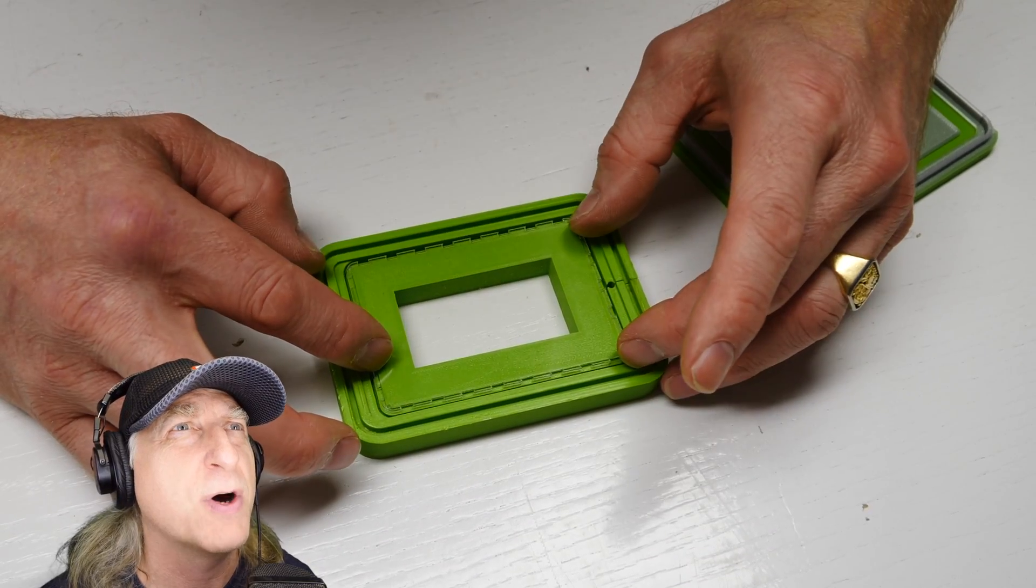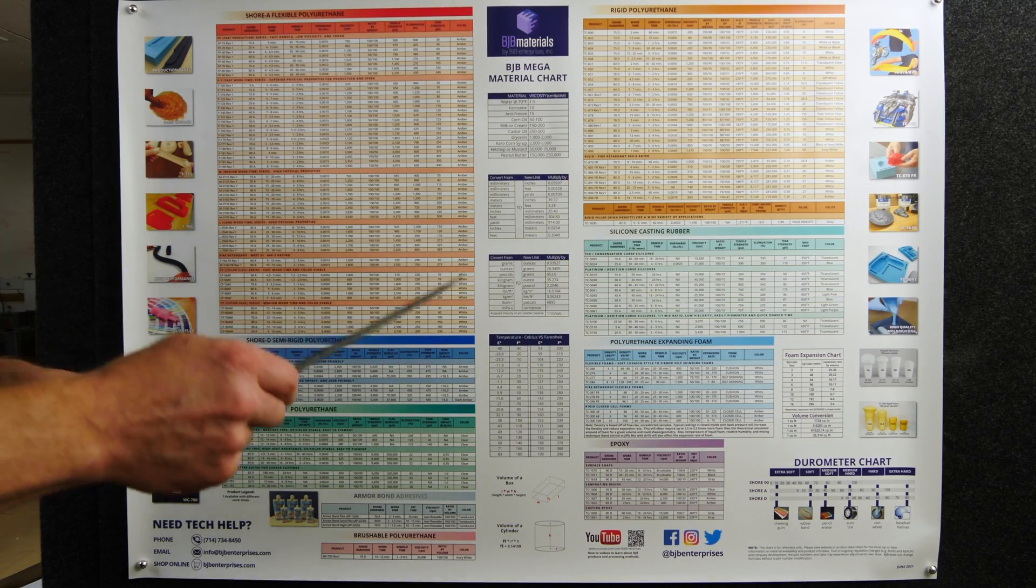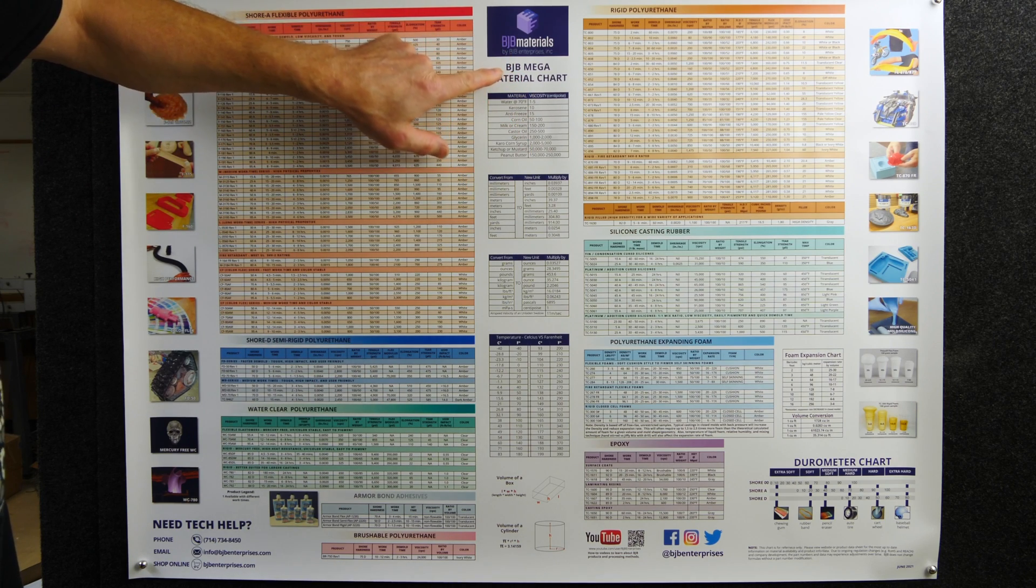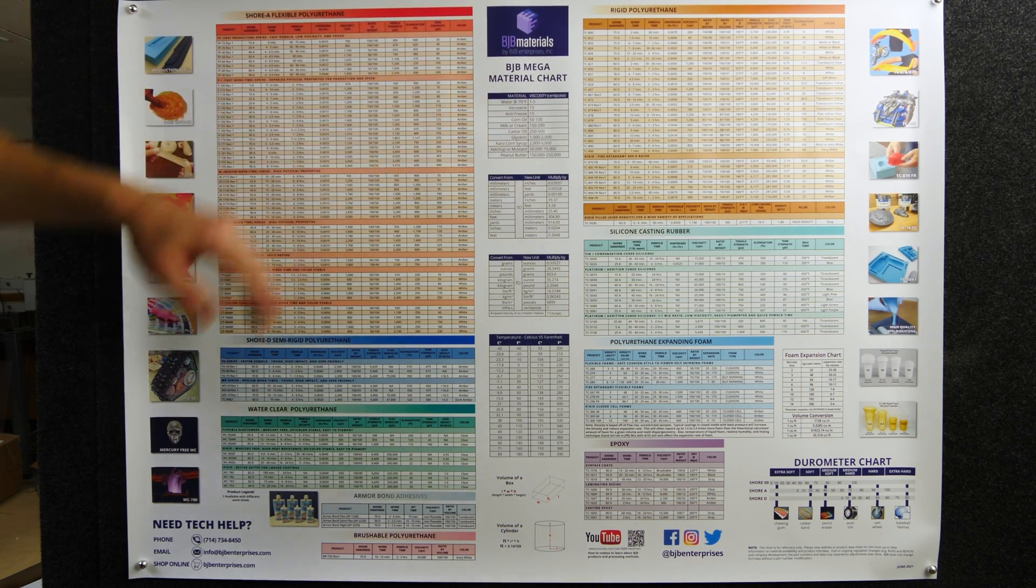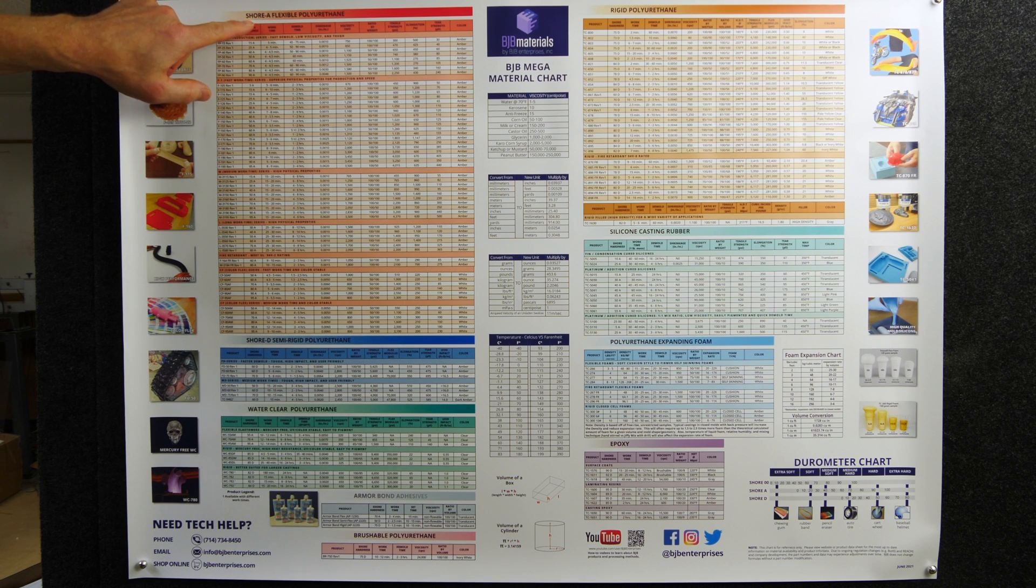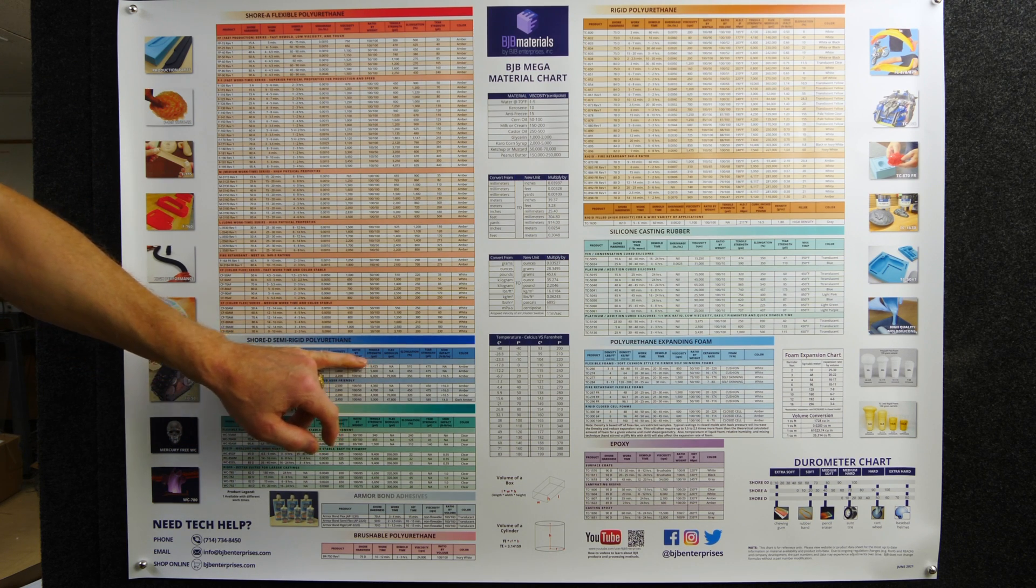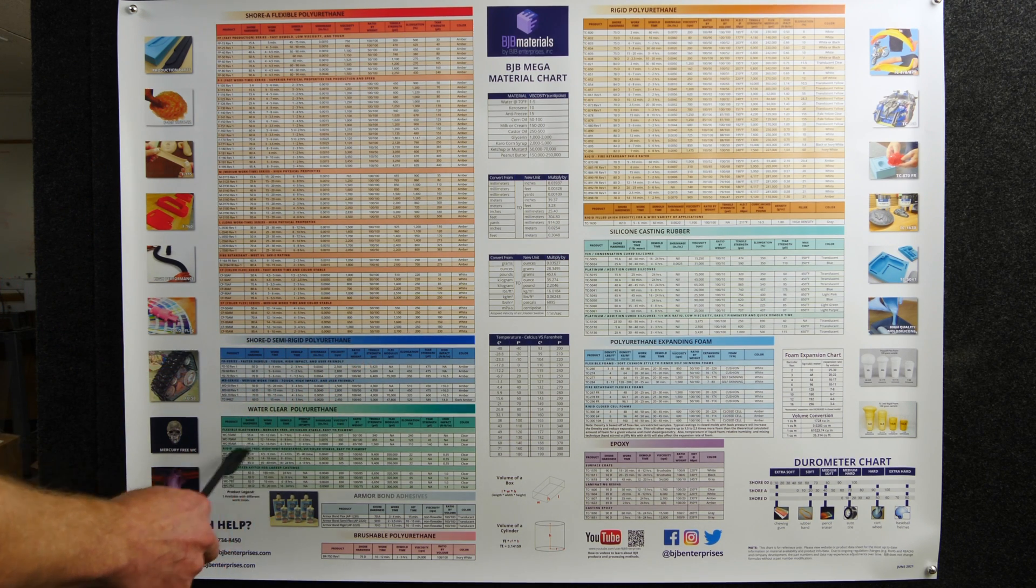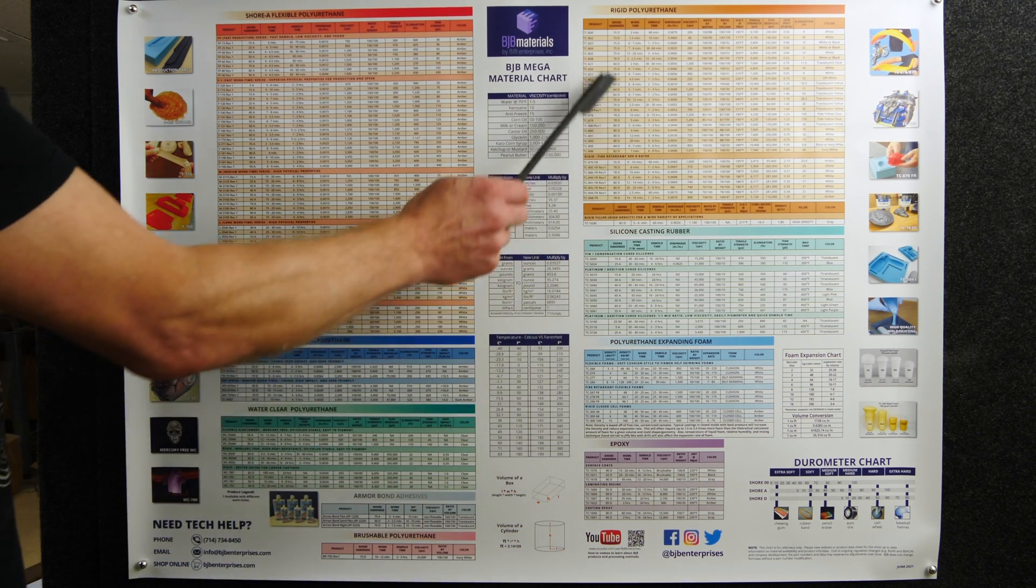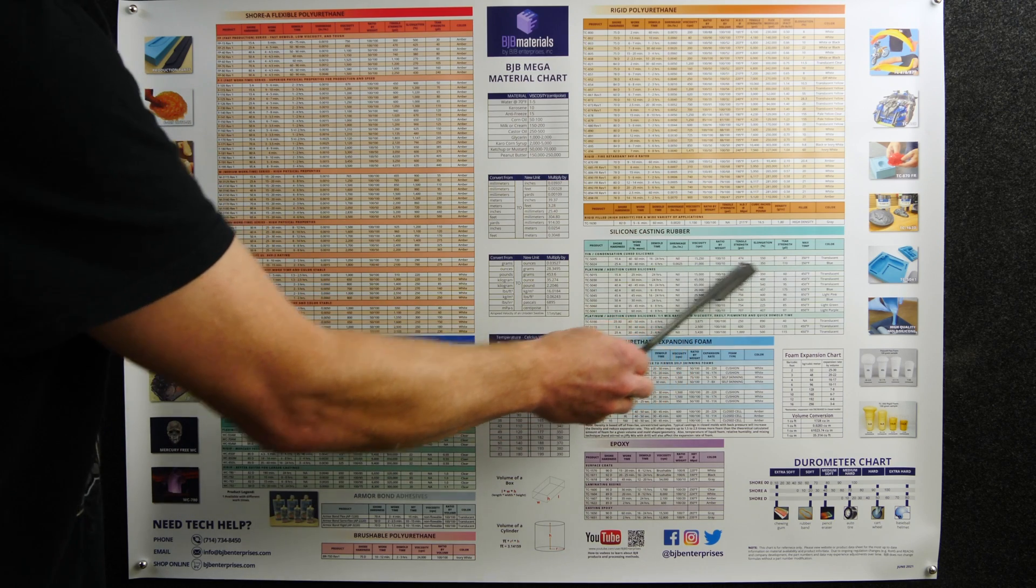This allows the polyurethane to bond and stay connected to the acrylic. When I'm picking out material for casting, I love to consult my BJB mega material chart. It's fantastic for selecting the right material based on the project. They have shore A flexible polyurethanes listed here on the left, shore D semi-rigid polyurethanes, water-clear polyurethanes, and then their adhesives and brushable urethanes here.